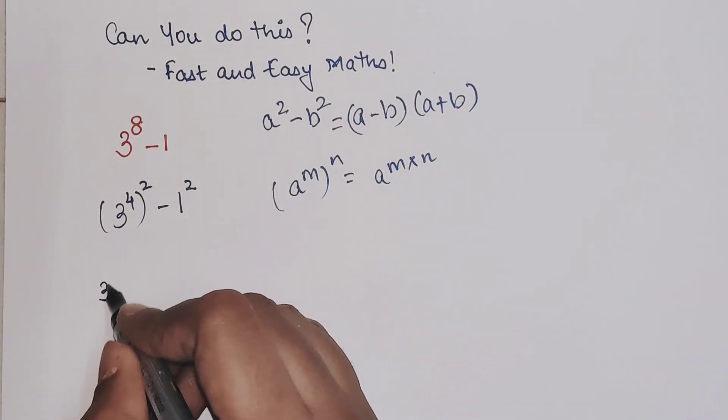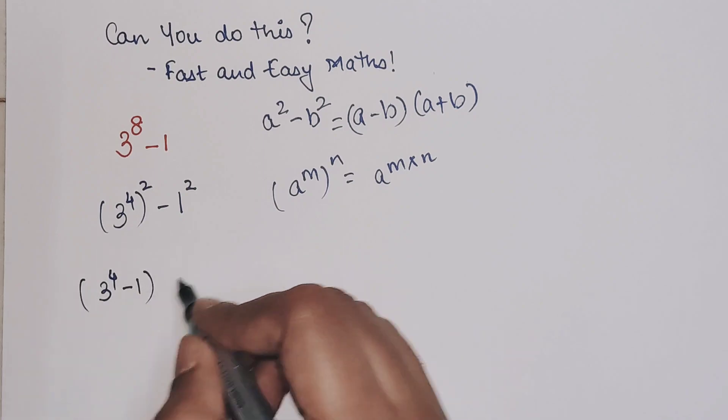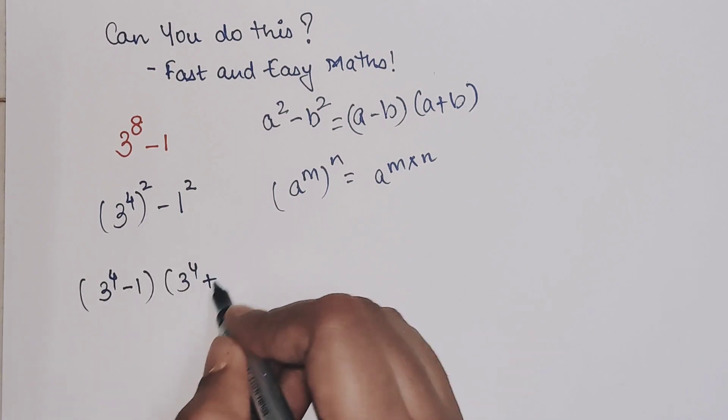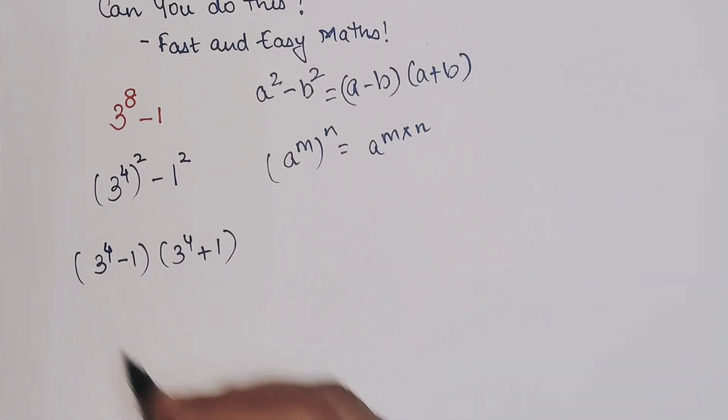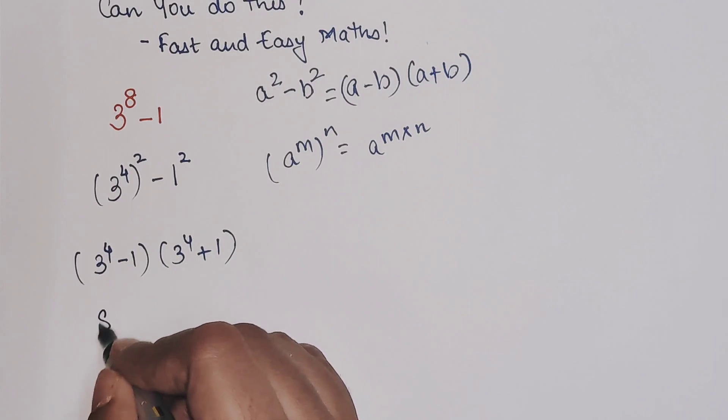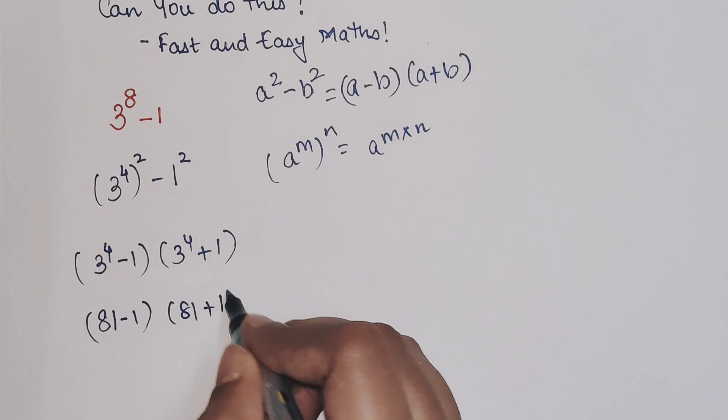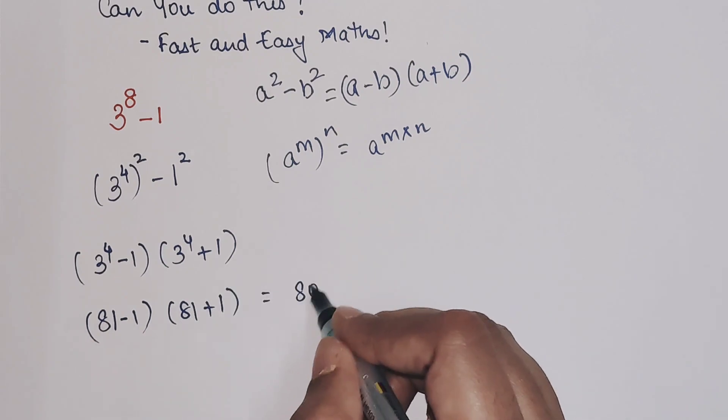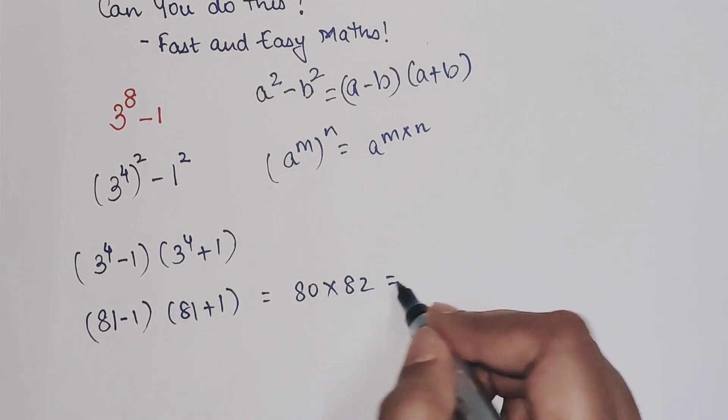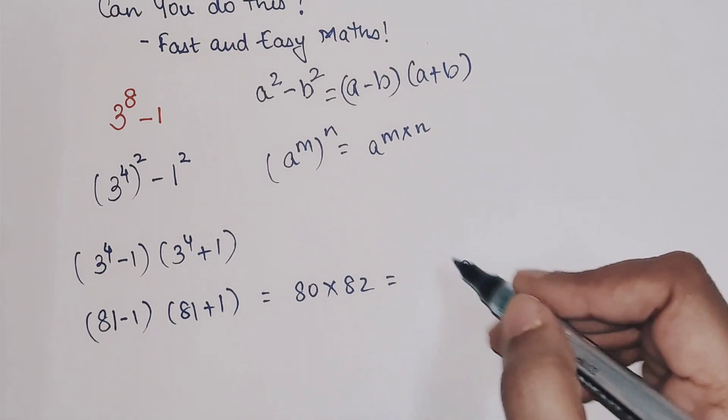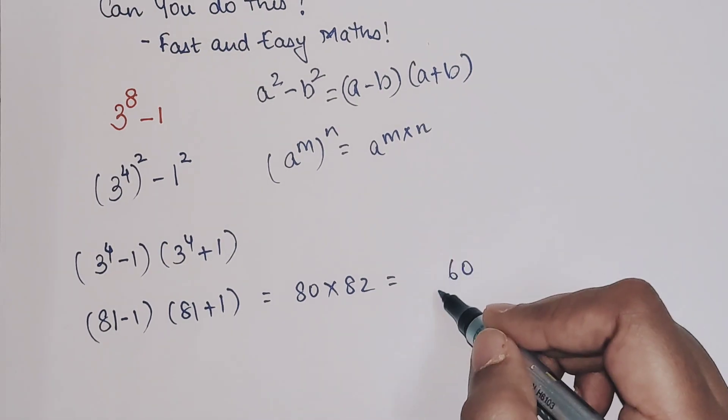Now this comes out to be (3⁴ - 1)(3⁴ + 1). 3⁴ - 1 = 81 - 1 and 3⁴ + 1 = 81 + 1. So this is 80 × 82, which equals 6560. That is your answer.